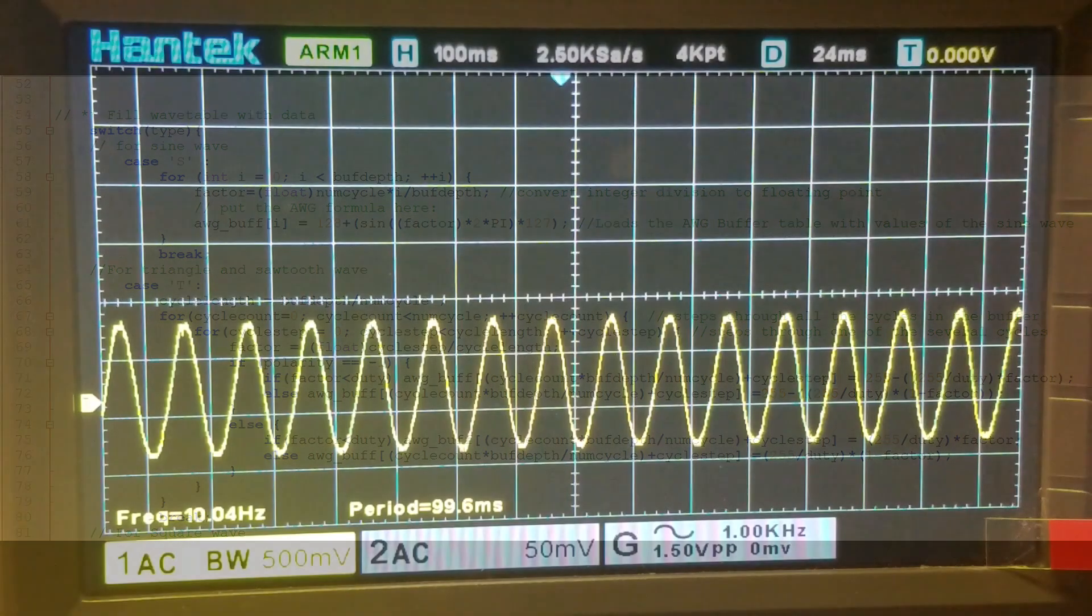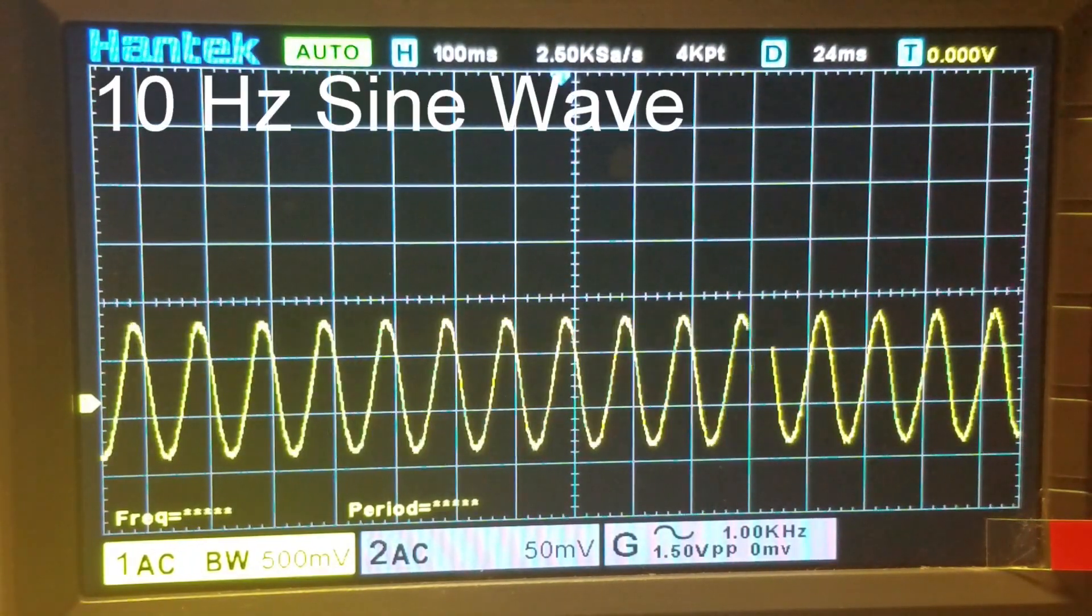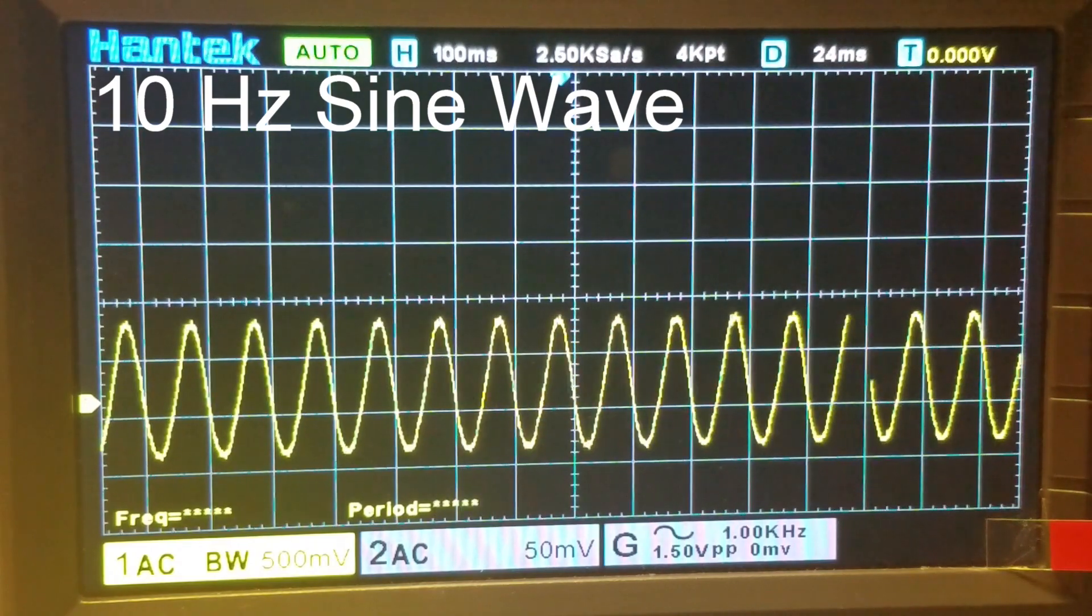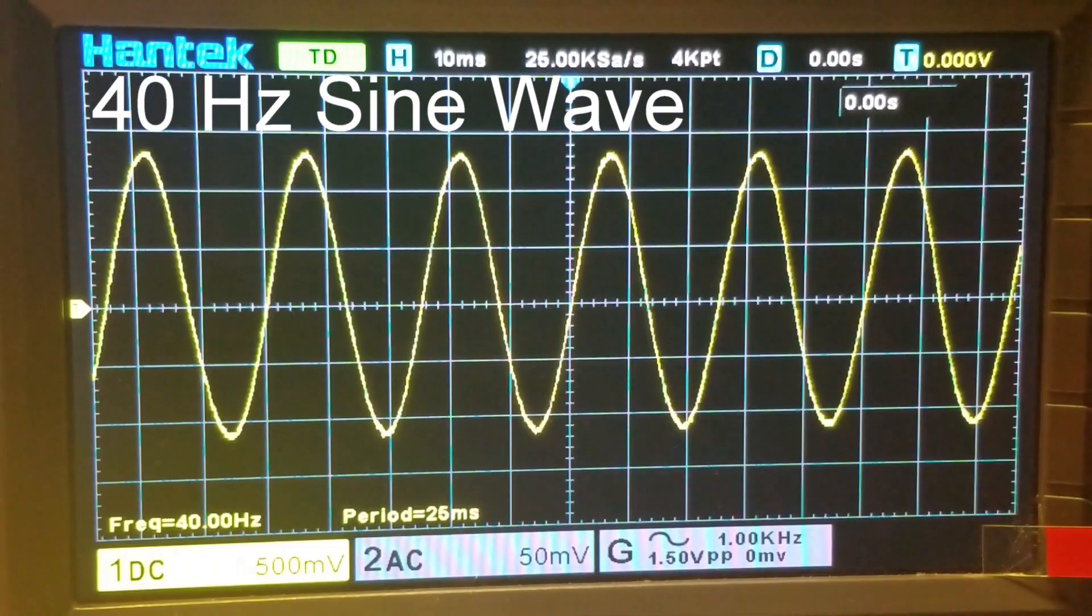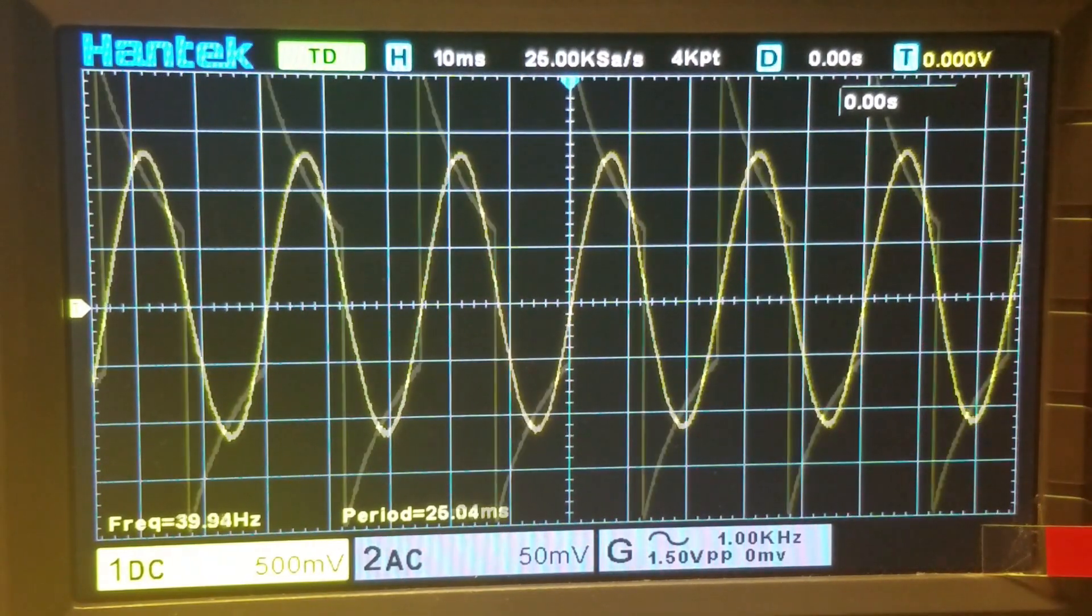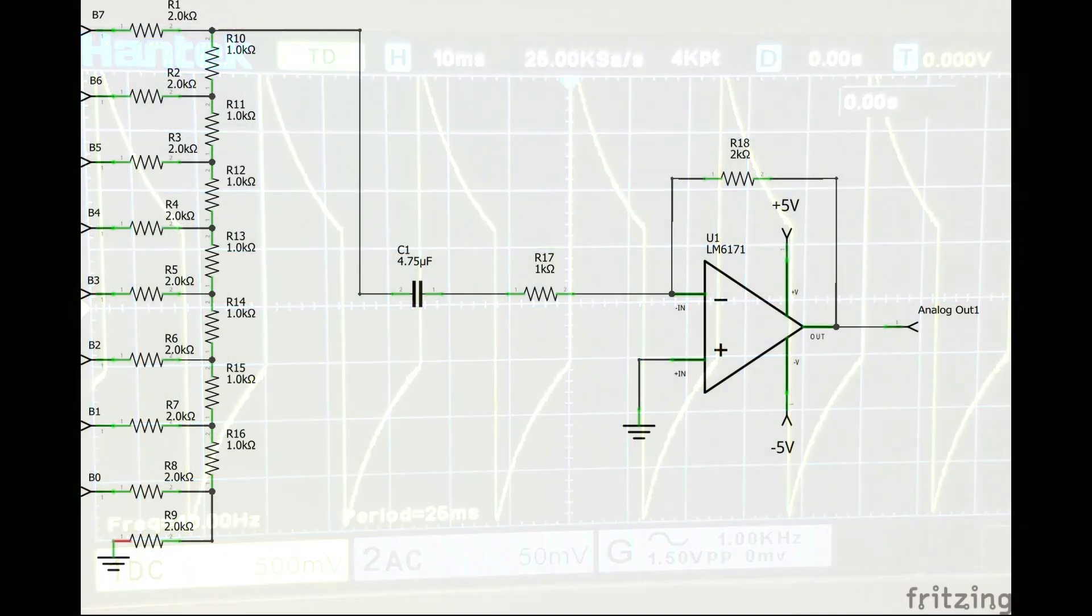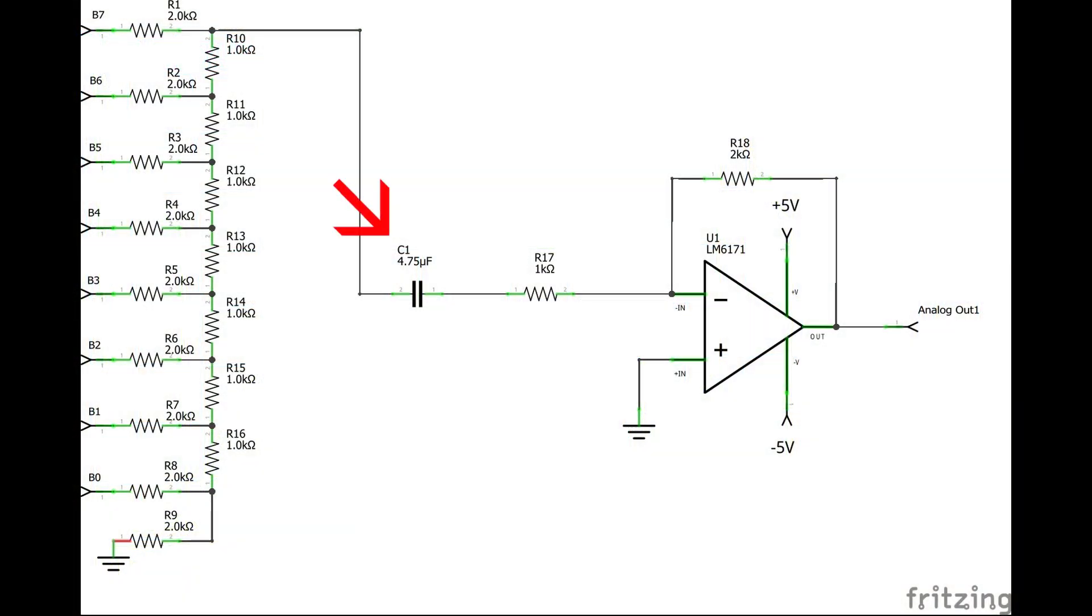Finally, let's demonstrate the pico as an AWG for very low frequencies. Here it is generating a sine wave at 10 hertz and at 40 hertz. We don't have a very crisp square wave due to the AC coupling capacitor between the digital to analog converter and the amplifier circuit. That capacitor needs to be higher if we want to generate a better square wave.